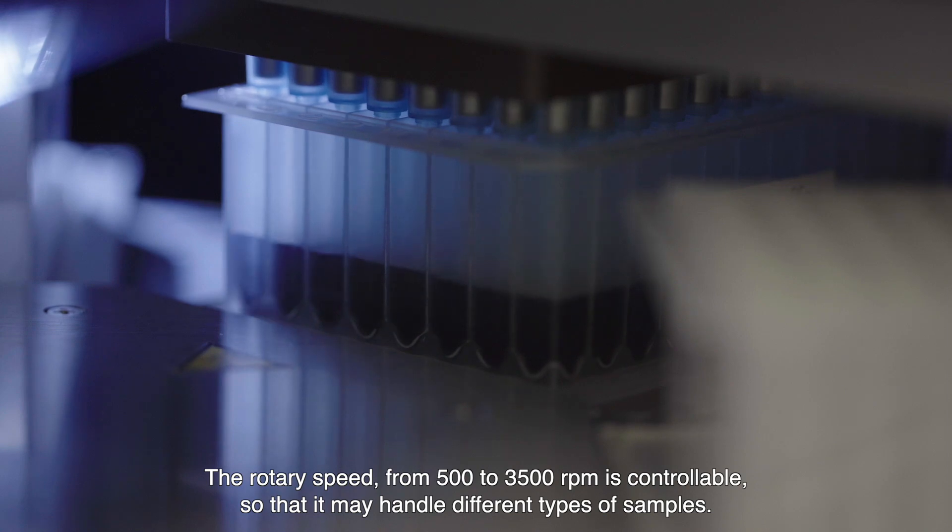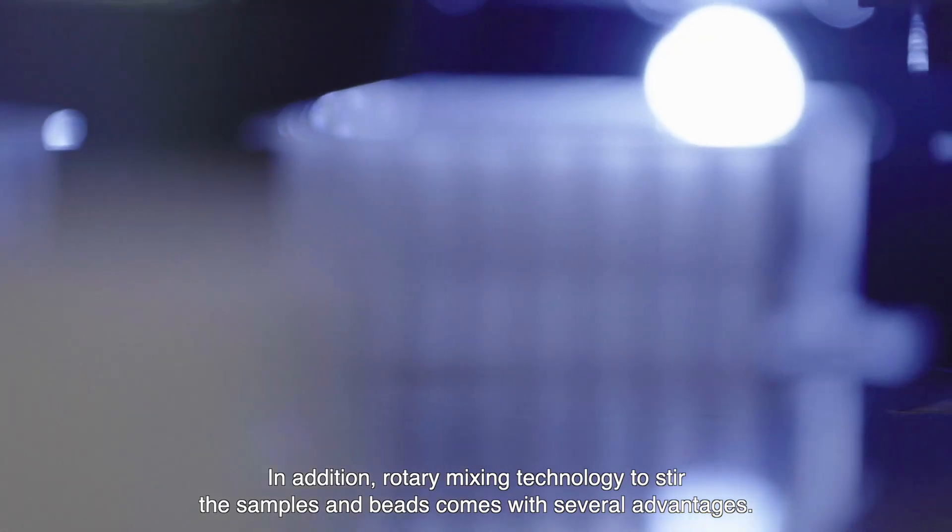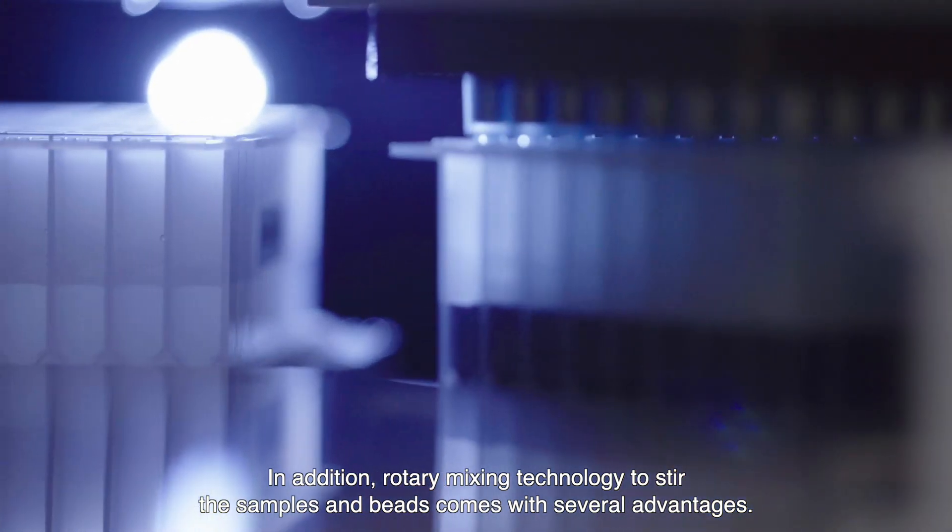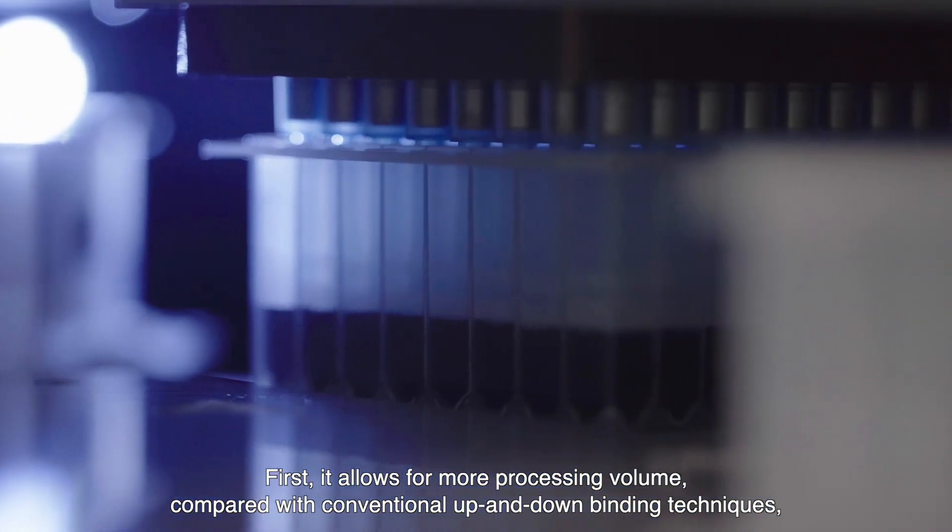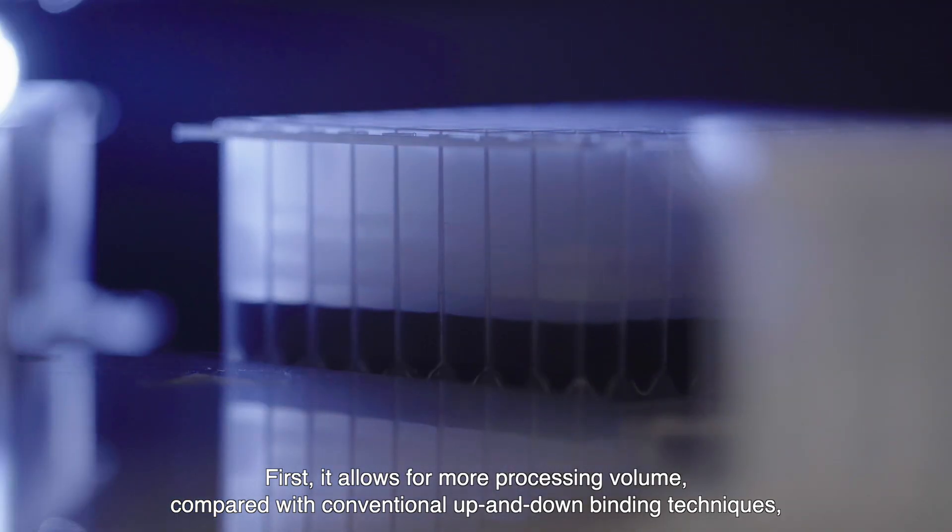It stirs the specimen with beads and buffer by a rotary apparatus driven by the motor. The rotary speed from 500 to 3500 RPM is controllable so that it may handle different types of samples. In addition, rotary mixing technology to stir the samples and beads comes with several advantages.